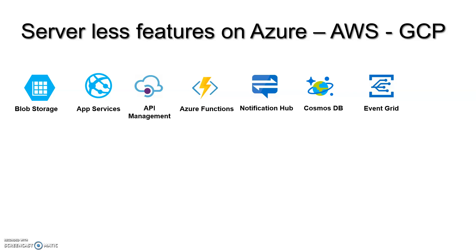Blob Storage is used to store any type of files and objects. API Management is used to create your API gateways for existing web services or new backend services. If you have a platform and you want to expose your APIs to the public domain, you can use API Management. If you would like to run code based on demand or based on some trigger, then Azure Functions is the best suitable option.